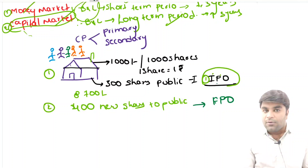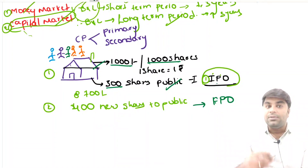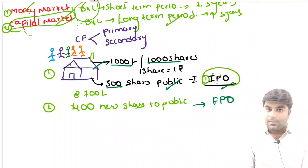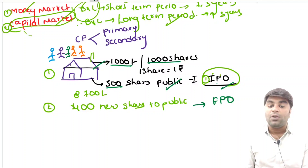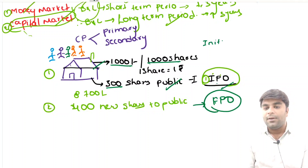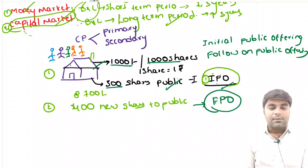This follows the initial public offering. Initially the company was established with 1000 rupees with each share worth 1 rupee. Out of this, 300 shares were given to the public for the first time — called Initial Public Offering. Now they want to expand, so they issue 400 new shares. We call this a Follow-on Public Offering. So totally the company now has 1100 shares, with the public holding 300 shares.